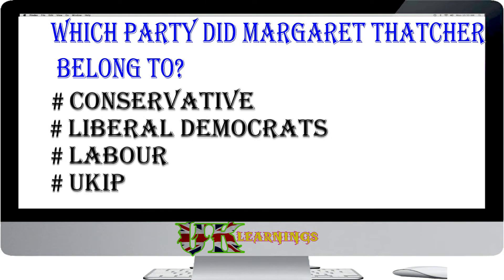Which party did Margaret Thatcher belong to? Conservative, Liberal Democrats, Labour. The answer is Conservative. Margaret Thatcher, Britain's first woman Prime Minister, led the Conservative government from 1979 to 1990.